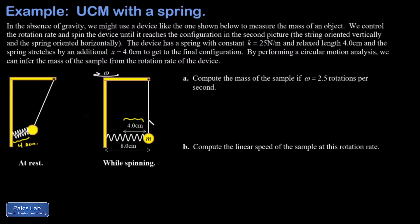Now just intuitively you can imagine that a larger mass would require a slower rotation rate to get this thing stretched into the vertical position, while a smaller mass would require a higher rotation rate. So you should be able to use the rotation rate to figure out what the mass is. One other important specification is the spring constant: 25 newtons per meter. In part a we're asked for the mass of the sample if our rotation rate is 2.5 rotations per second.